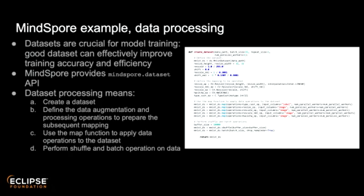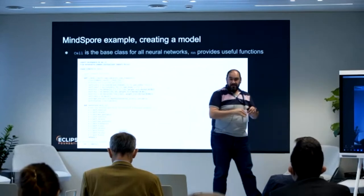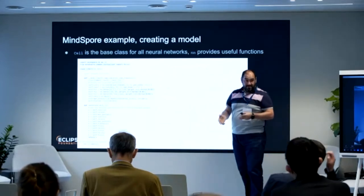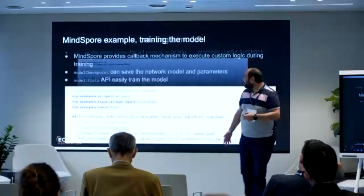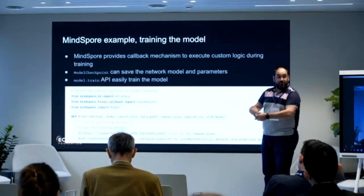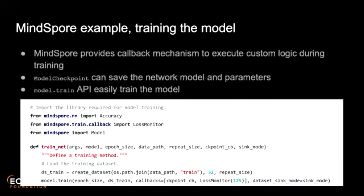Once it's done, you create or reuse a model — what MindSpore calls a cell. The cell is the base Python class that allows you to create any kind of neural network. The construct method lets you construct the model. Once you have the model, you train it using the model.train API, where you can also define the number of parallel executors to spread training across multiple machines.